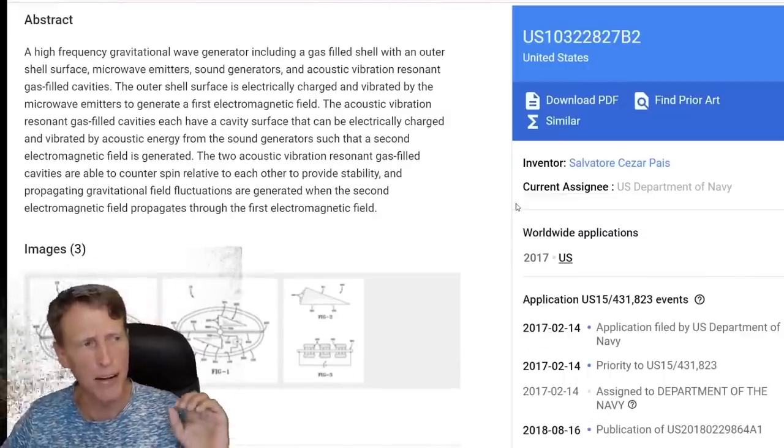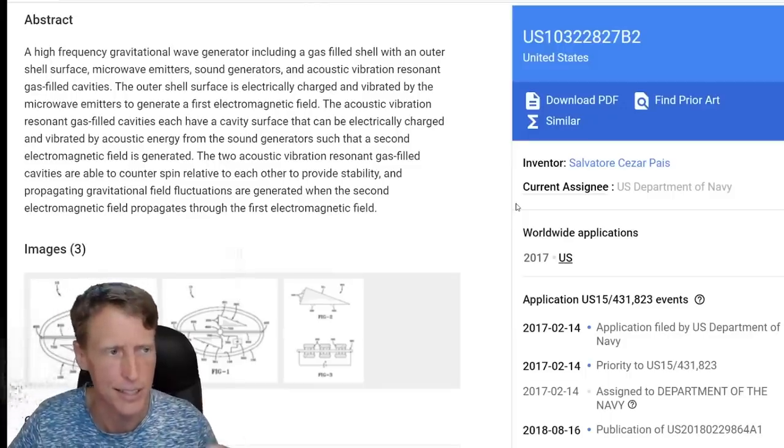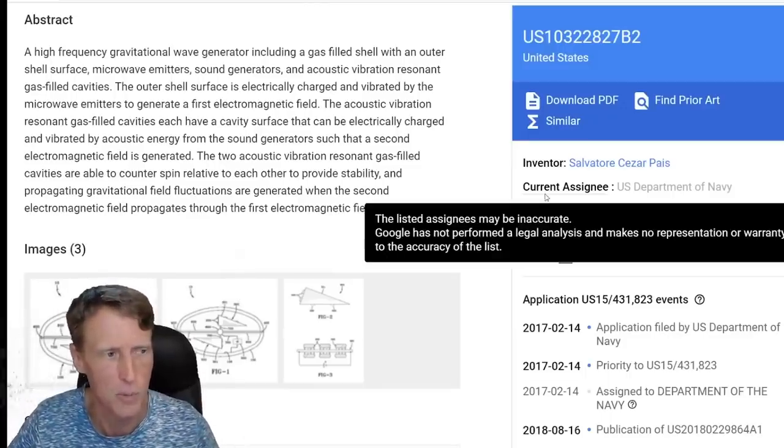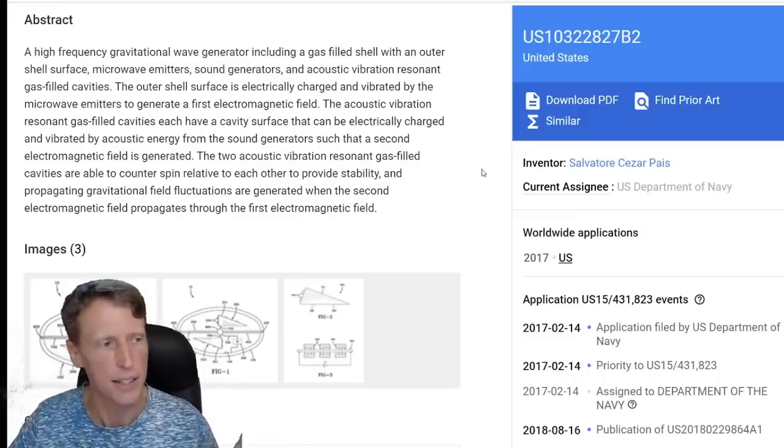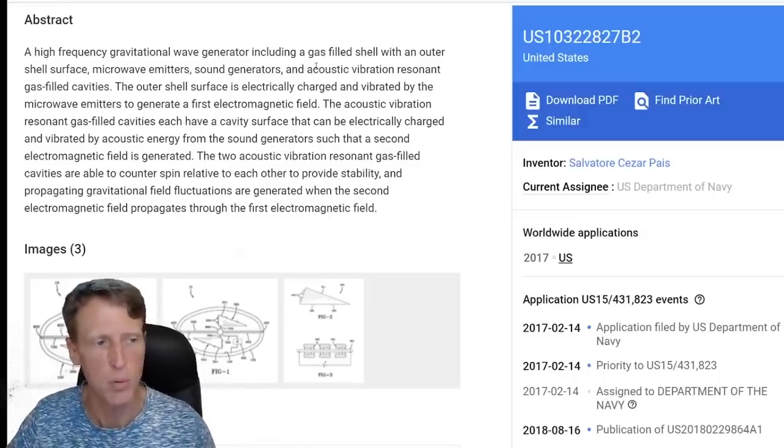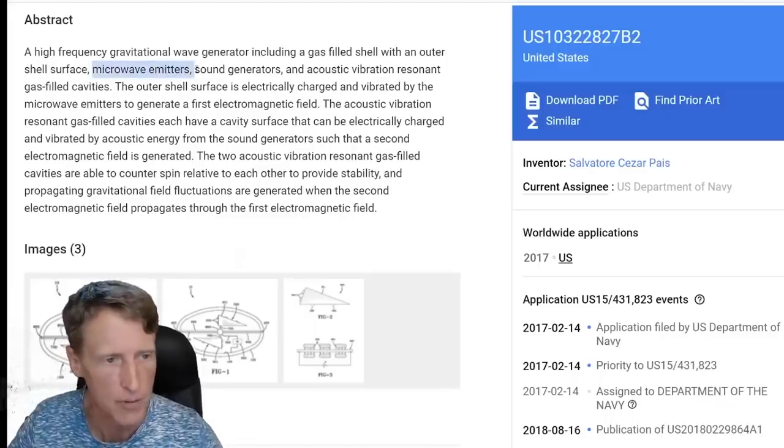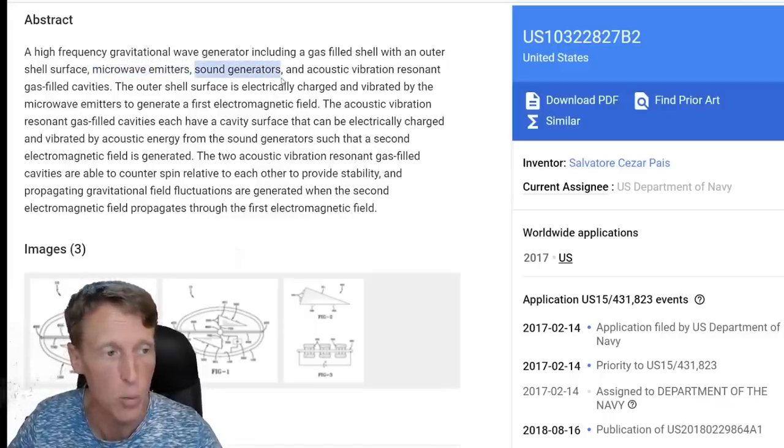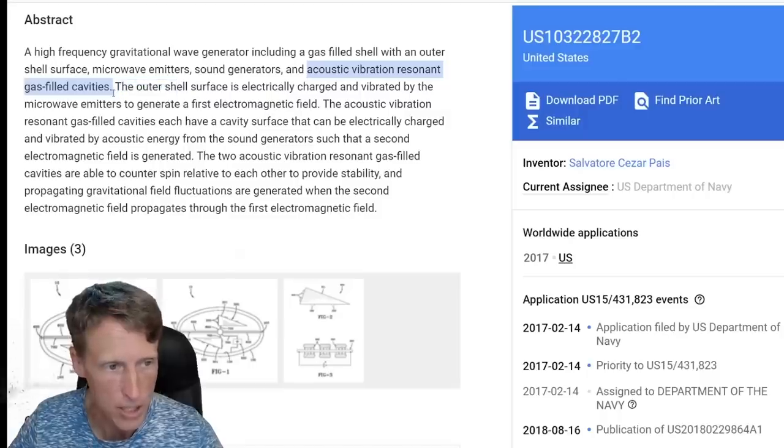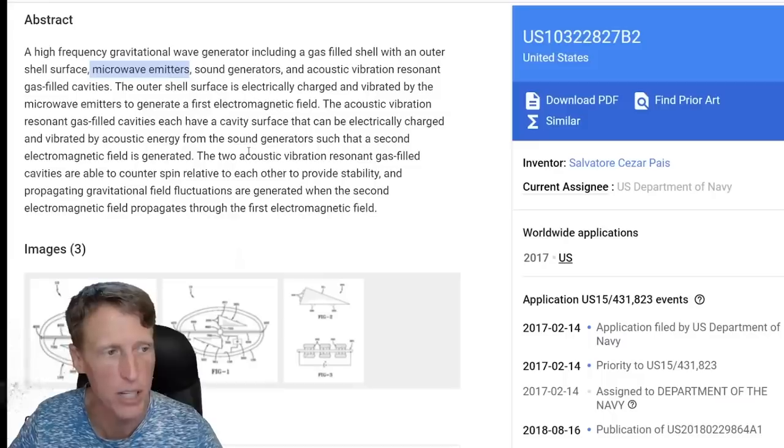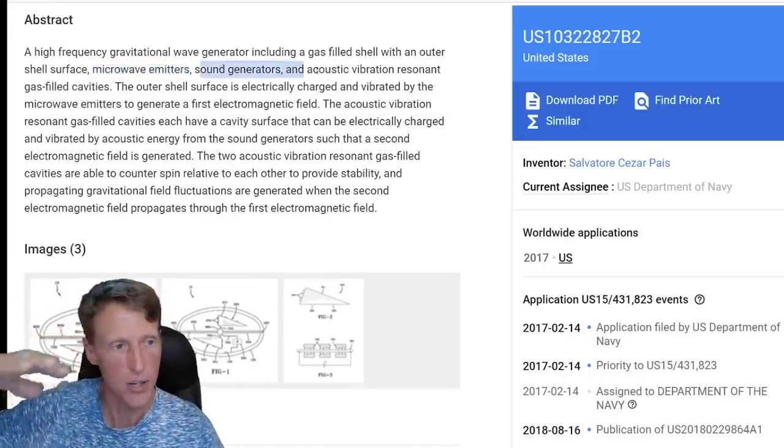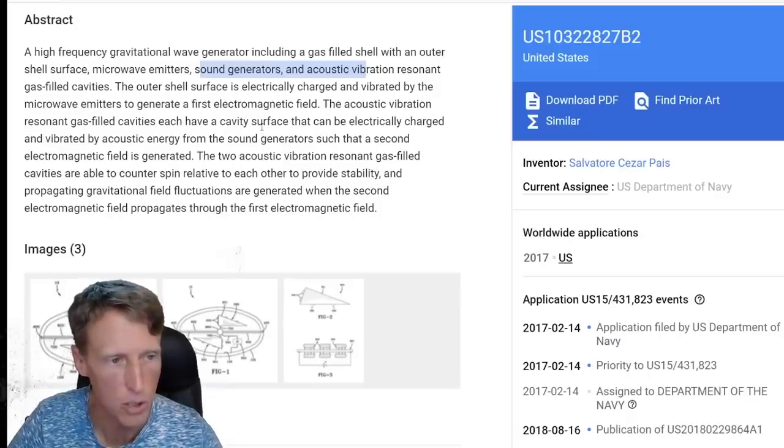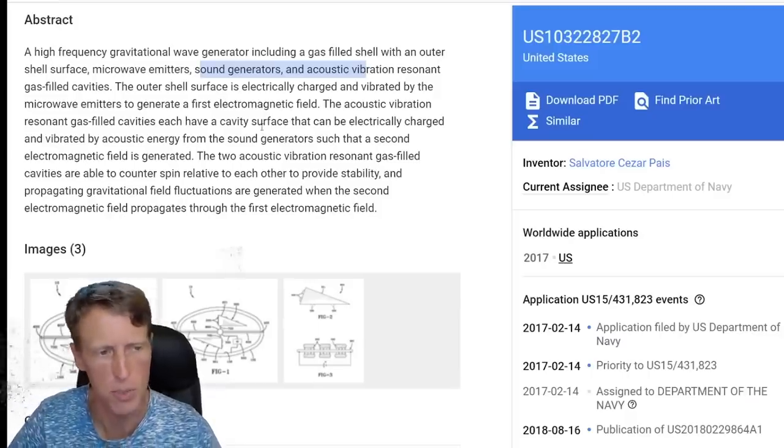The Navy I believe paid five hundred thousand dollars, which is nothing really in the field of weapons research. Most of that just for salaries on this - can we do a high frequency gravitational wave generator? Here it is: including a gas filled shell with an outer shell surface, microwave emitters, sound generators like I mentioned, an acoustic vibration resonant gas filled cavity. Basically you have the microwave emitters that's going to hit and create that field on the outside of the craft, and then you have these sound generators which are going to use acoustics to vibrate the gas filled cavity.